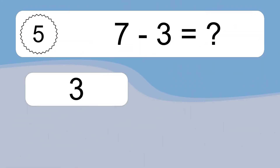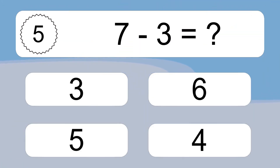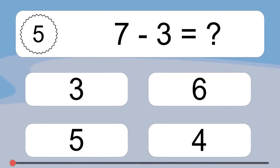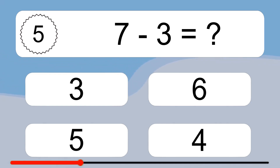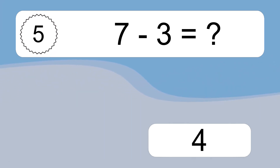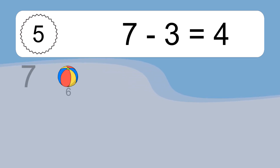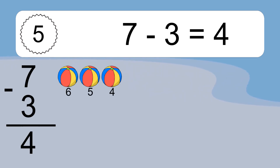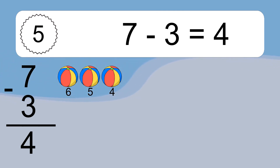7 minus 3 equals what? 7 minus 3 equals 4. Let's count it: 6, 5, 4.